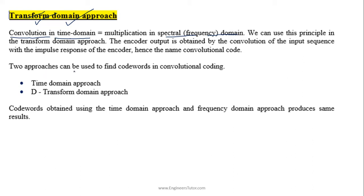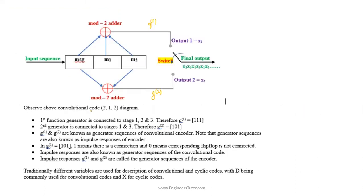We have two approaches to find the codewords or output of the encoder: one is the time domain approach and the other is the transform domain approach. Codewords obtained using both domains produce the same result. Not only these two domains, but even the codewords obtained from graphical representations like tree diagrams and trellis diagrams will also be the same.